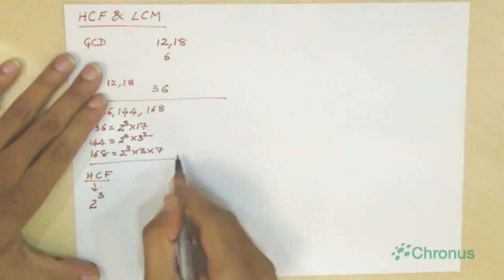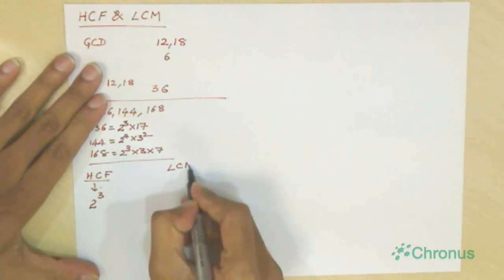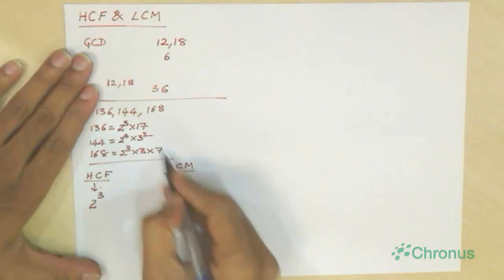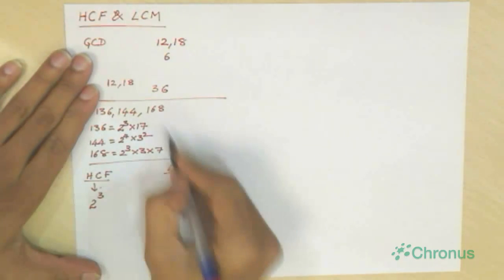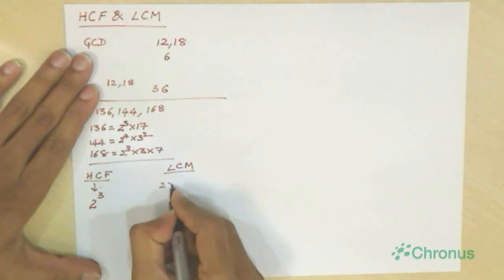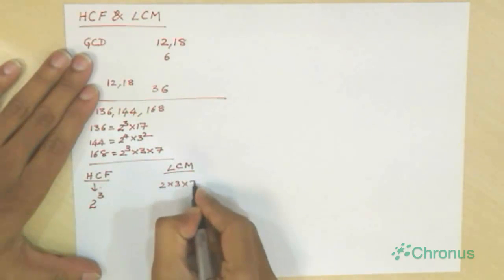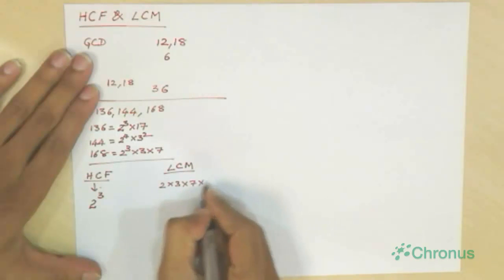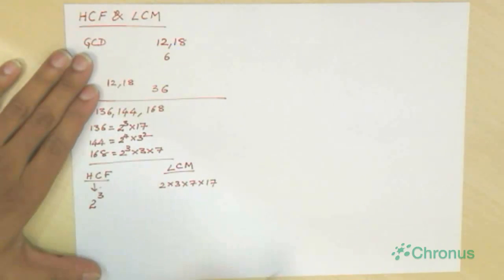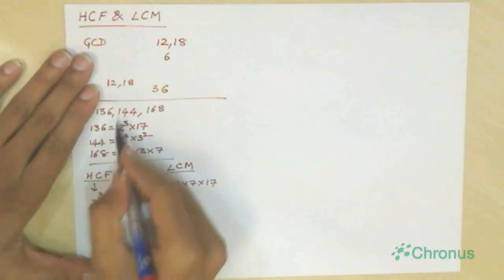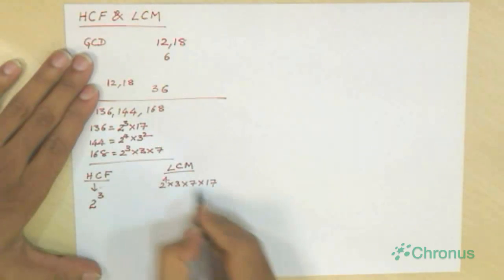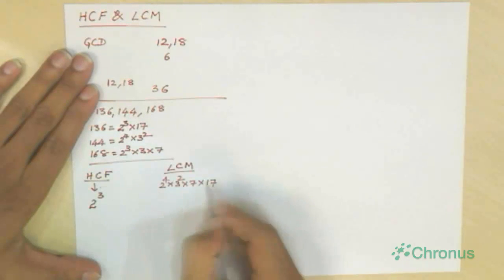LCM is similar, but here we take all the prime numbers present across the numbers: 2, 3, 7, and 17. Then we take the highest power of each. The highest power of 2 is 4, the highest power of 3 is 2, the highest power of 7 is 1, and the highest power of 17 is 1. So the LCM is 2 to the power 4 into 3 squared into 7 into 17.